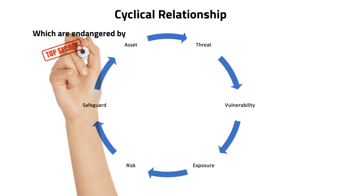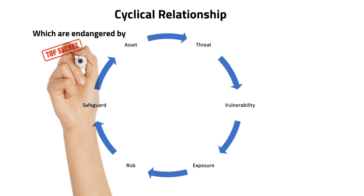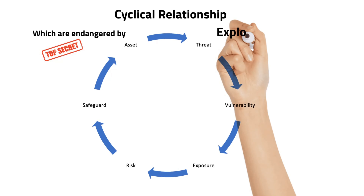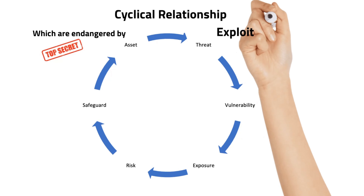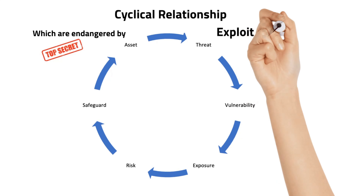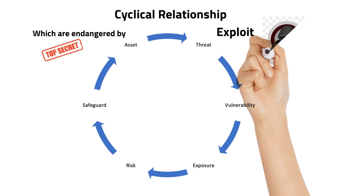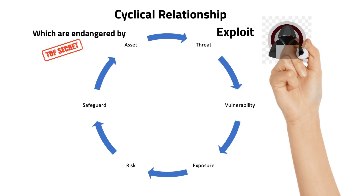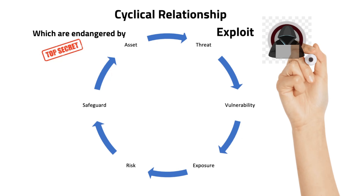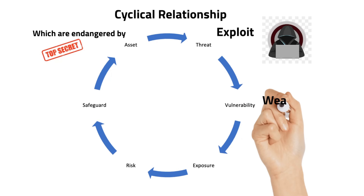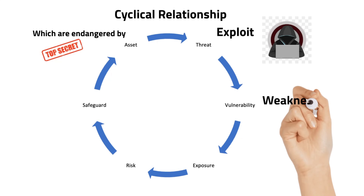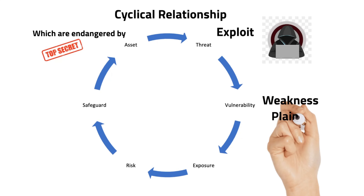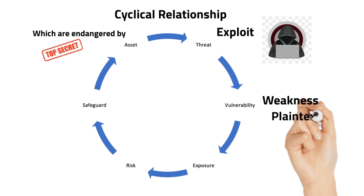Next is vulnerability. What is vulnerability? It is the weakness in an asset, or the absence or weakness of a safeguard or countermeasure — we can call it a flaw. In our example, we are going to take 'top secret' as an asset. The vulnerability is that we kept it as plain text, meaning without encrypting it. If it falls into the wrong hands, they can easily read it — that is the weakness.